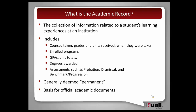There are other pieces of assessment that often come up on areas of the academic record — things like probation, dismissal, and for some institutions, progression or benchmark milestones. A third aspect that's actually pretty important to think about is the idea of permanence. This is information we typically think of as permanent. From a registrarial perspective, if you're keeping it permanently and plan to keep it forever, you've probably hit on something that might be the academic record.